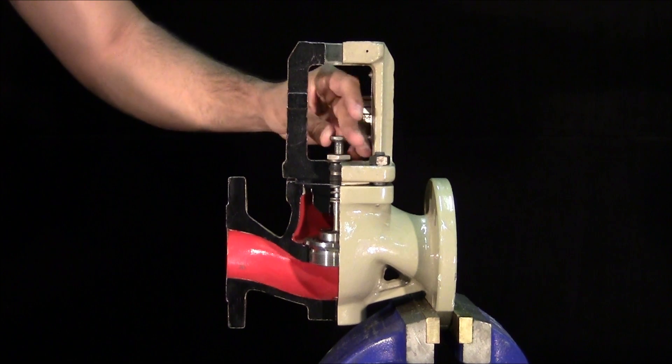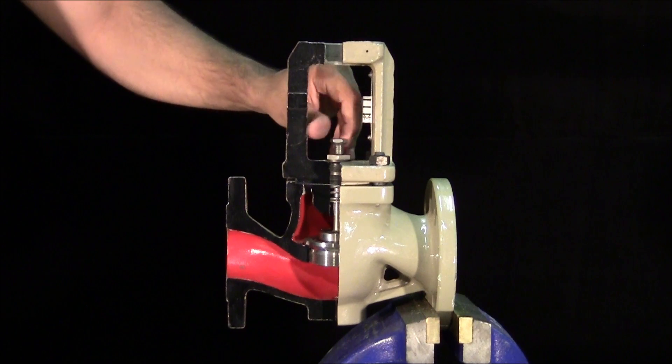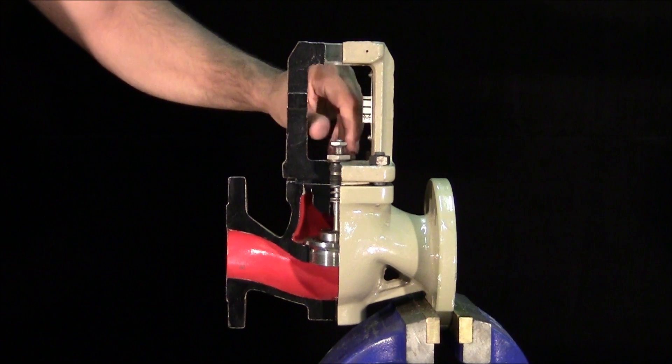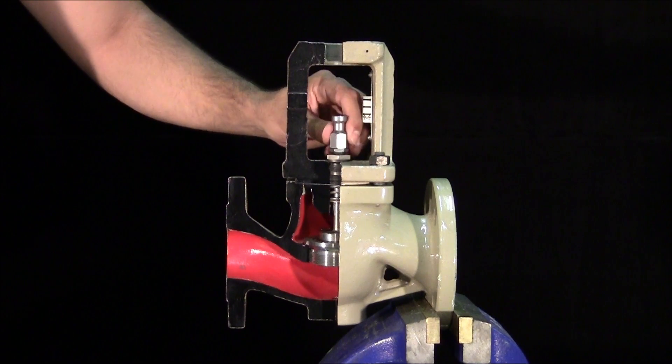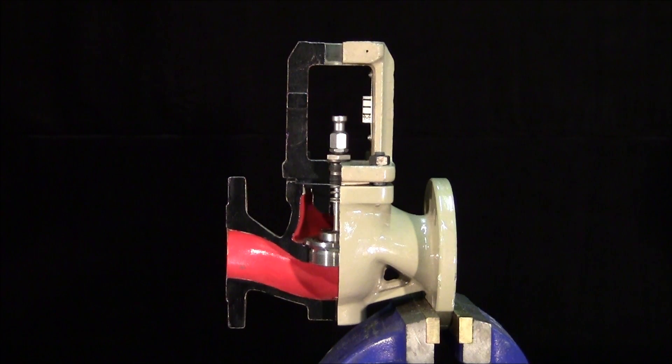The final step remaining is to loosely thread the locking nut and stem connector nut onto the plug stem. The valve is now ready for actuator installation.